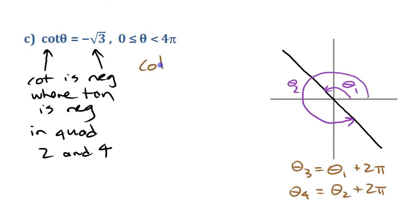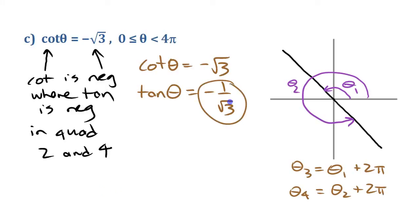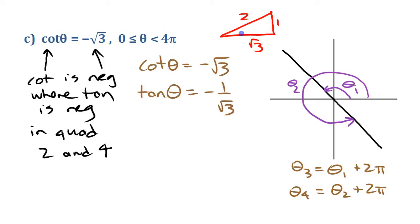Starting with cotangent theta equals negative root 3, it's easier to convert: tangent equals negative 1 over root 3, since cotangent is its reciprocal. That value is recognizable from the special triangle 1, root 3, 2. Looking at the smaller angle, opposite over adjacent gives 1 over root 3, so the reference angle is 30 degrees or π/6.